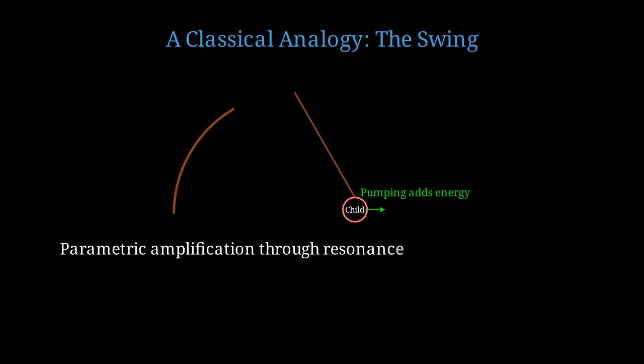Let me give you a classical analogy that captures the essence of this phenomenon. Imagine a child on a swing. Initially, the swing is barely moving, with very small oscillations. But if the child pumps their legs at just the right frequency, matching the natural frequency of the swing, they can gradually build up large amplitude oscillations. This is called parametric amplification.